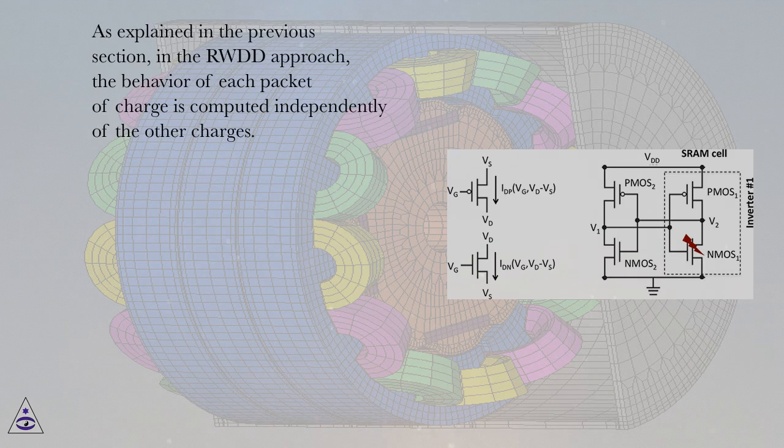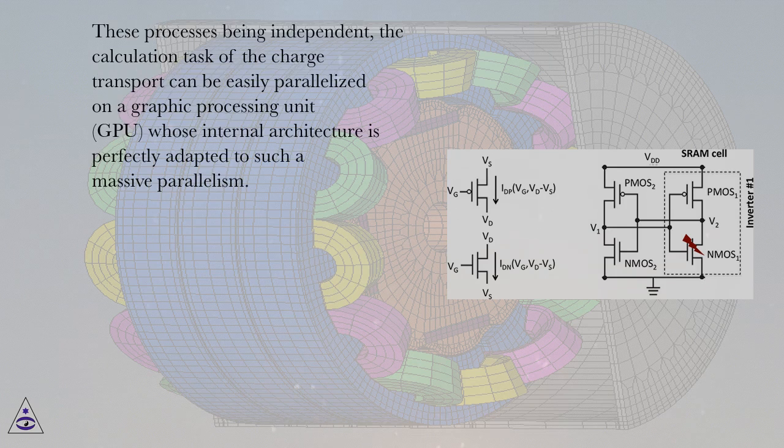As explained in the previous section, in the RWDD approach, the behavior of each packet of charge is computed independently of the other charges. These processes being independent,